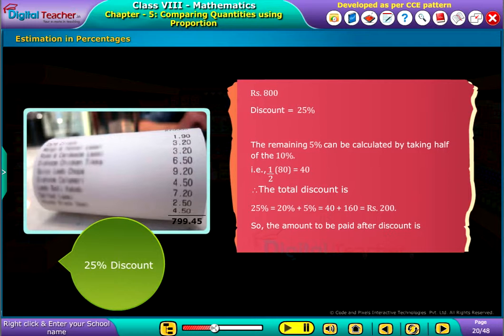So the amount to be paid after discount is approximately equal to rupees 800 minus rupees 200, which is equal to rupees 600. Let us solve some more examples.